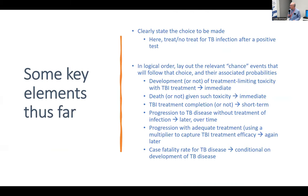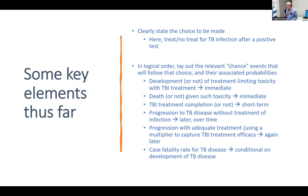To recap briefly: we've clearly stated the choice — treat versus no treat for TB infection following a positive immunologic test — then in logical order we lay out the relevant chance events, probabilities, and outcomes. If we treat, she might develop toxicity or not; conditional on toxicity she might or may not survive it. Then TB treatment completion, progression over time, the multiplier for the beneficial effect of preventive treatment on progression risk, and the case fatality rate for TB disease. Those are the main elements of this simplistic decision tree.